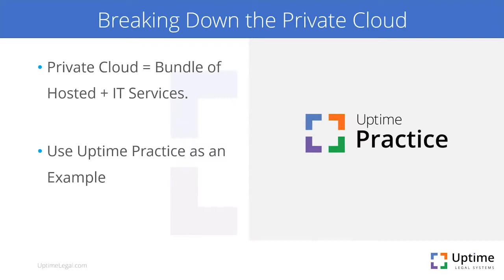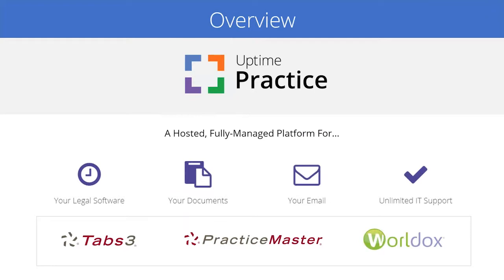Since a private cloud is ultimately a bundle of hosted and other IT services, the best way to describe it is to break down its components. I'm going to use our own private cloud service called Uptime Practice as the example. In a sentence or less: Uptime Practice is a hosted, fully managed IT platform for four things — your legal software such as Tabs 3, Practice Master, and WorldDox; your documents, like a G Drive or S Drive file system; your email, in our case via hosted Exchange; and IT support for the cloud, your applications, and your local environment.